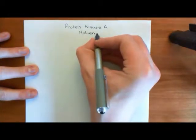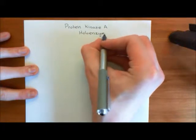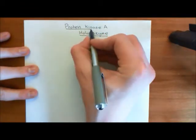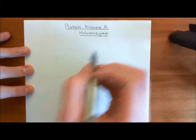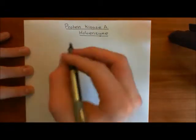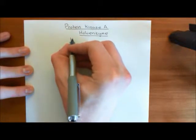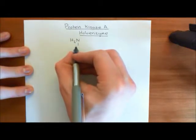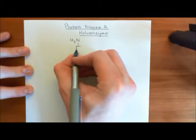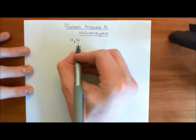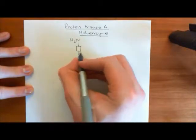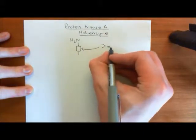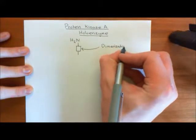We're going to start off by discussing the regulatory subunits of protein kinase A. Overall, protein kinase A holoenzymes consist of four separate proteins, and we're going to start with these regulatory subunits. One of the first important domains within the polypeptide is something known as the dimerization and docking domain.